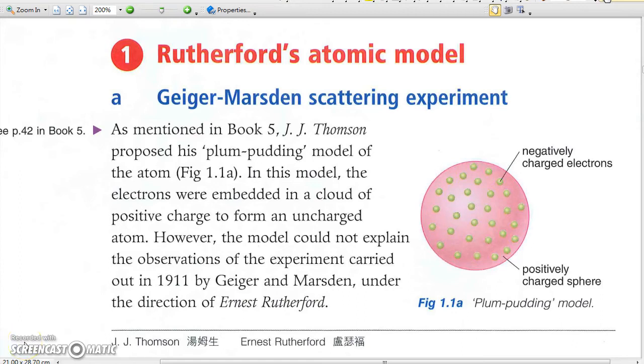Before Rutherford's atomic model, another model called the Plum-Pudding model was proposed by J.J. Thomson, consisting of electrons and a cloud of positive charge.